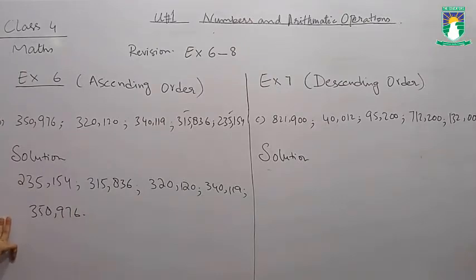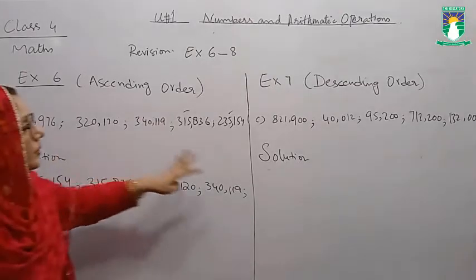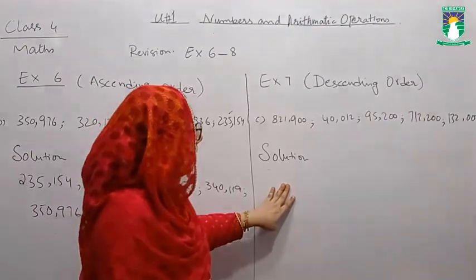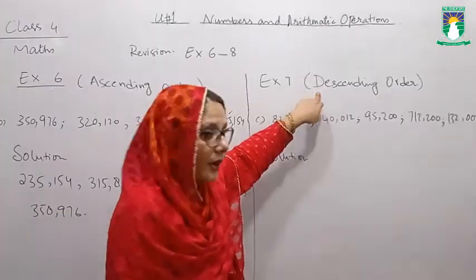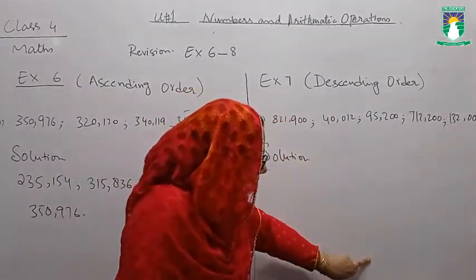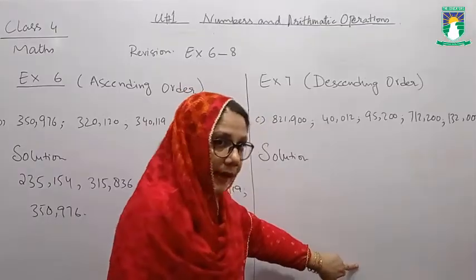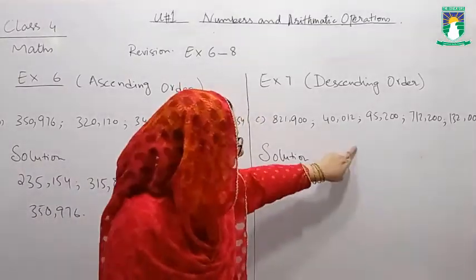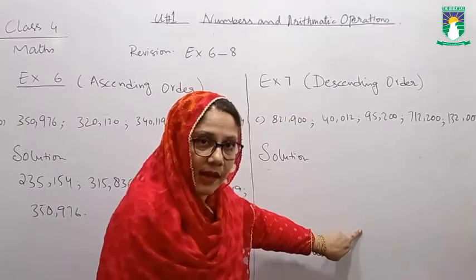The same procedure we are going to follow in descending order. D for descending, D for down—that we are coming from upward to downward. 10, 9, 7, 6. We are going to write the biggest house first.